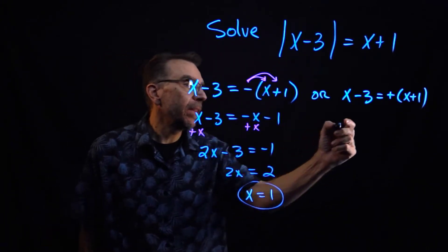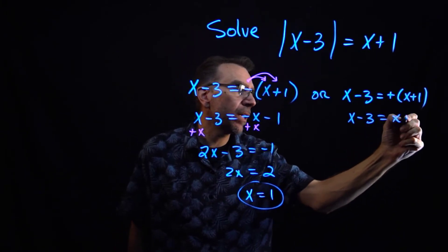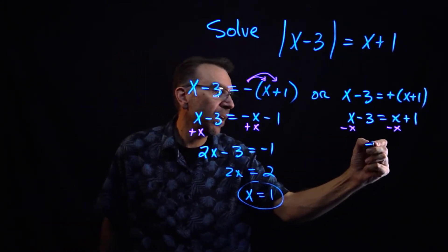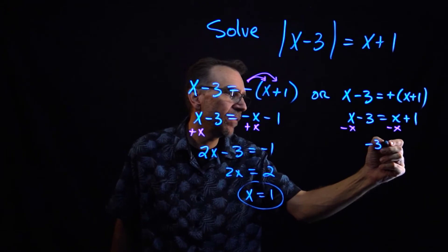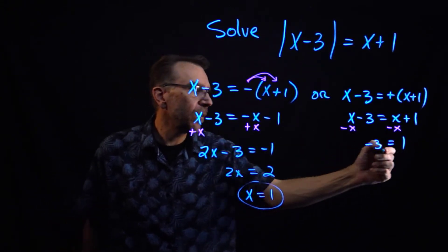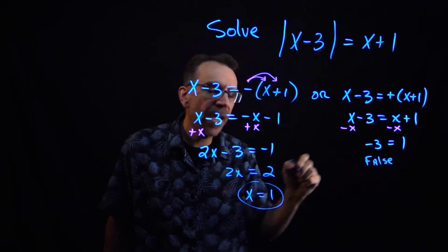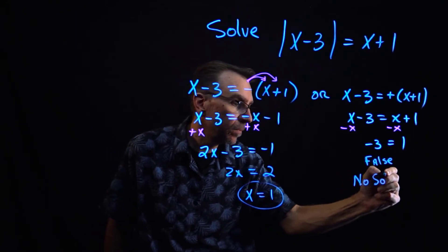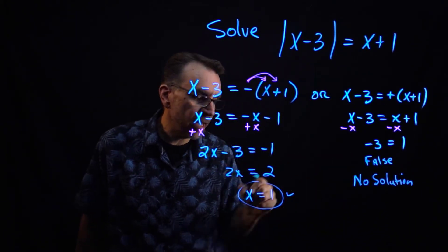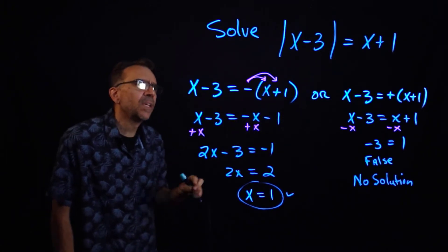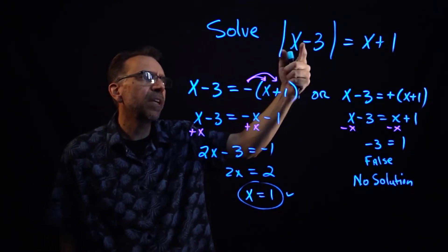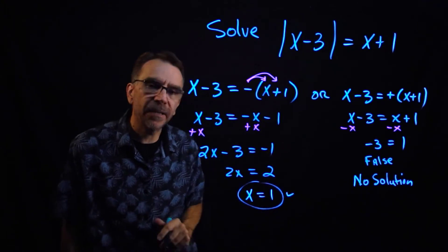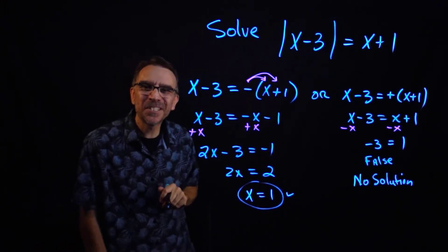For the other branch, x minus 3 equals x plus 1. Subtracting x from both sides, the x terms cancel leaving negative 3 equals 1, which is a false statement. A false statement means this branch contributes no solution. So the only solution is x equals 1. We can verify: absolute value of 1 minus 3 equals absolute value of negative 2 equals 2, and 1 plus 1 equals 2 — it checks out.